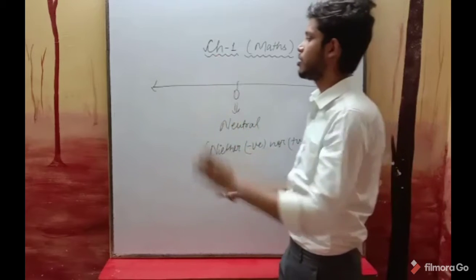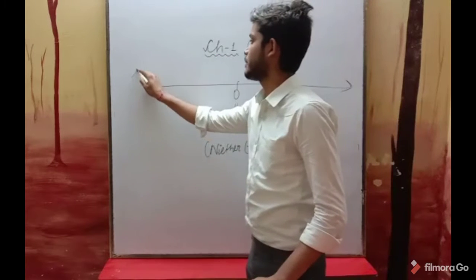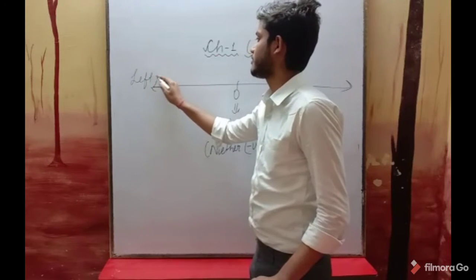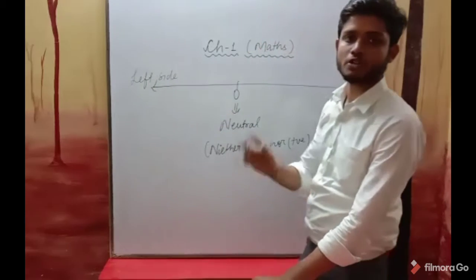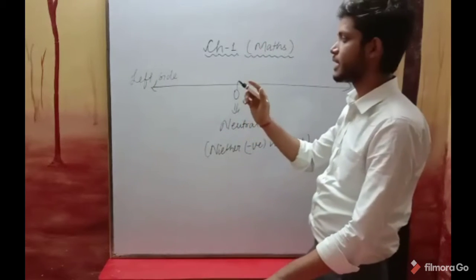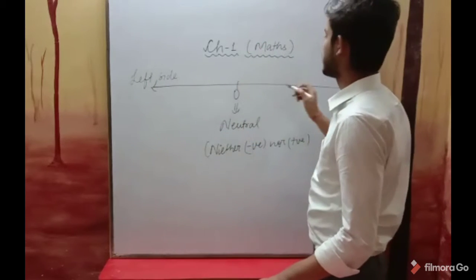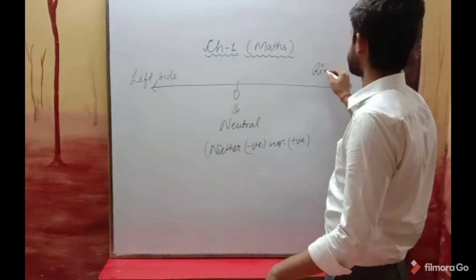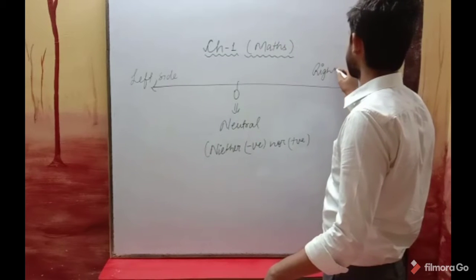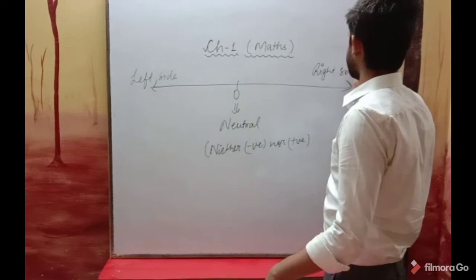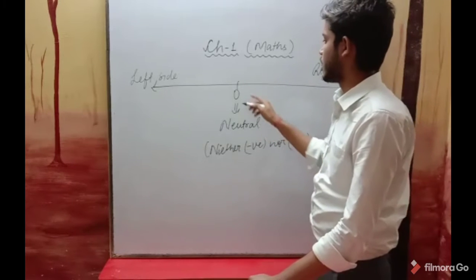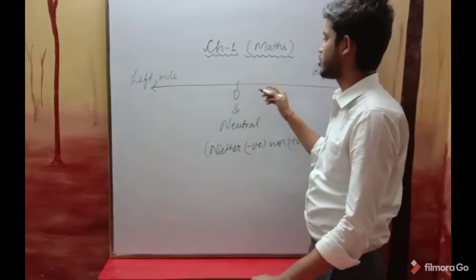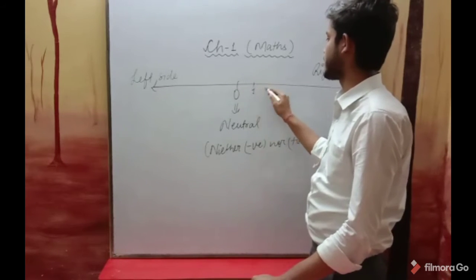Just like our left hand corresponds to the left side of the number line, and our right hand corresponds to the right side of the number line. On the right side of zero, we have positive numbers.